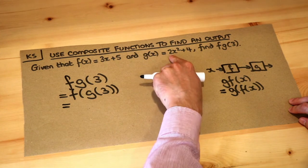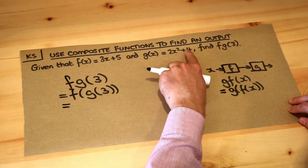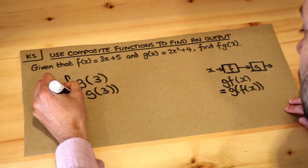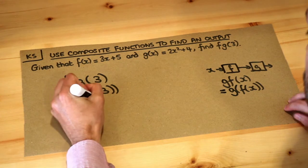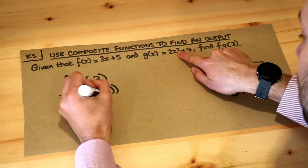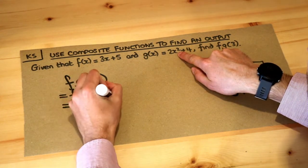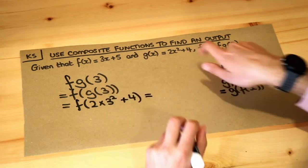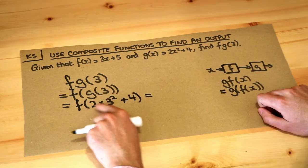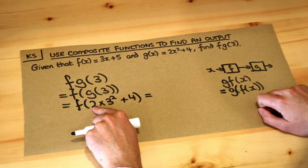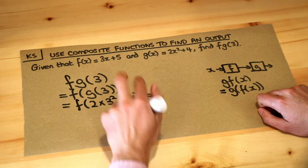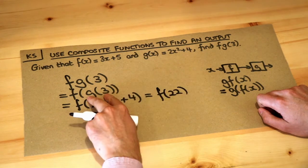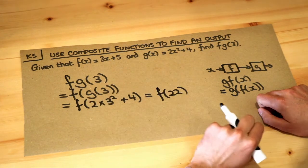g(3) is 2 times 3 squared plus 4. So let's just write the working there: 2 times 3 squared plus 4. And 3 squared is 9, times 2 is 18, plus 4 is 22. So therefore g(3) is 22.